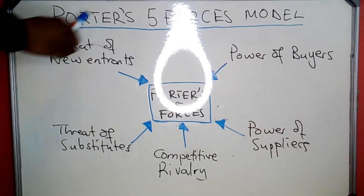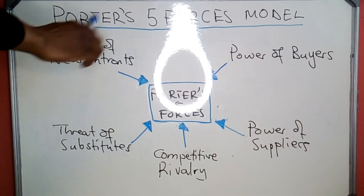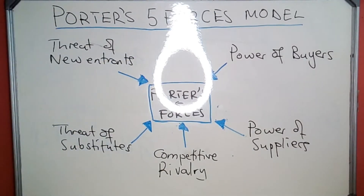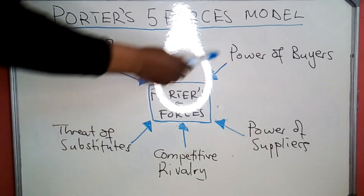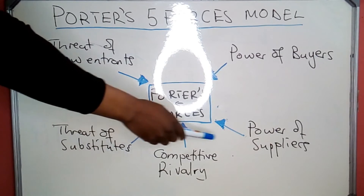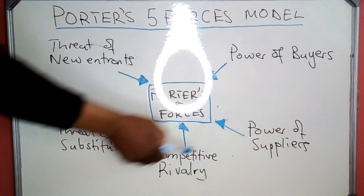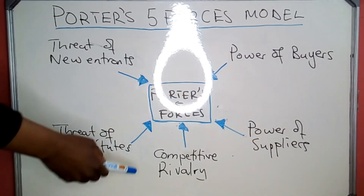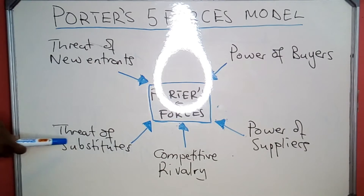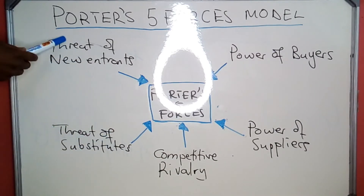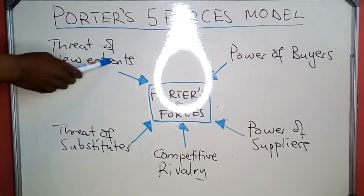Porter's Five Forces Model consists of the forces we are seeing here on the board. The first one, starting to your right, is the power of buyers. Next is the power of suppliers, then we have competitive rivalry, the threat of substitution, and the threat of new competitors.